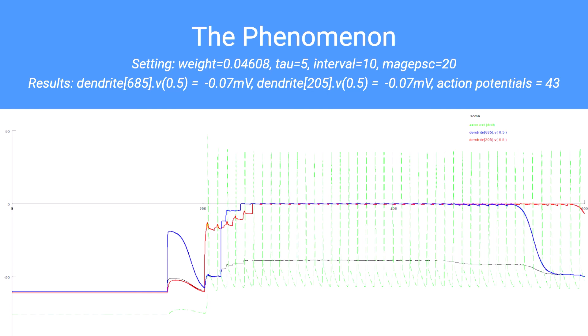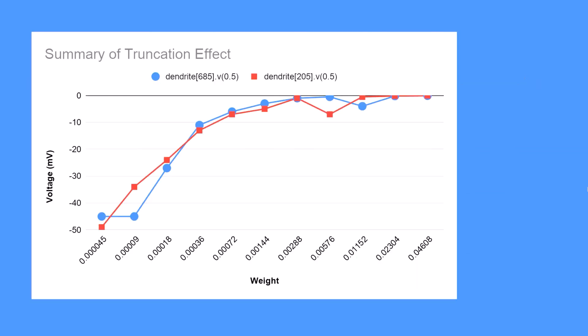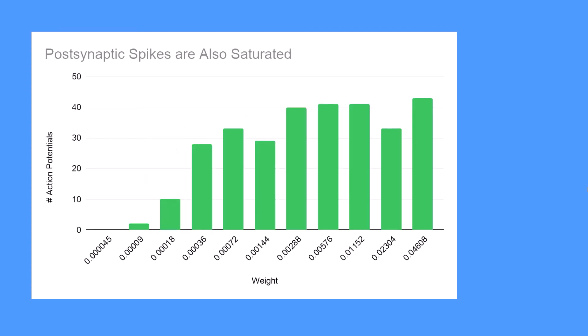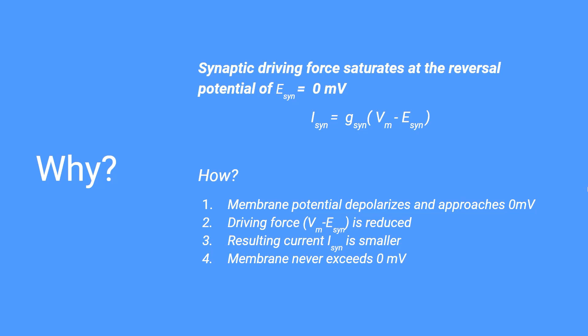Here is a graph of all recorded simulations. The voltage begins to saturate by the fourth experiment and truncates by the seventh. It was also noticed that the action potentials of each simulation began to saturate as well when the weight was increased. We believe this occurs because the driving force of the synapse begins to reduce as the cell membrane becomes more depolarized. As the synapse's driving force continues to decrease, the resulting current decreases as well, which causes the cell membrane to never exceed zero millivolts.